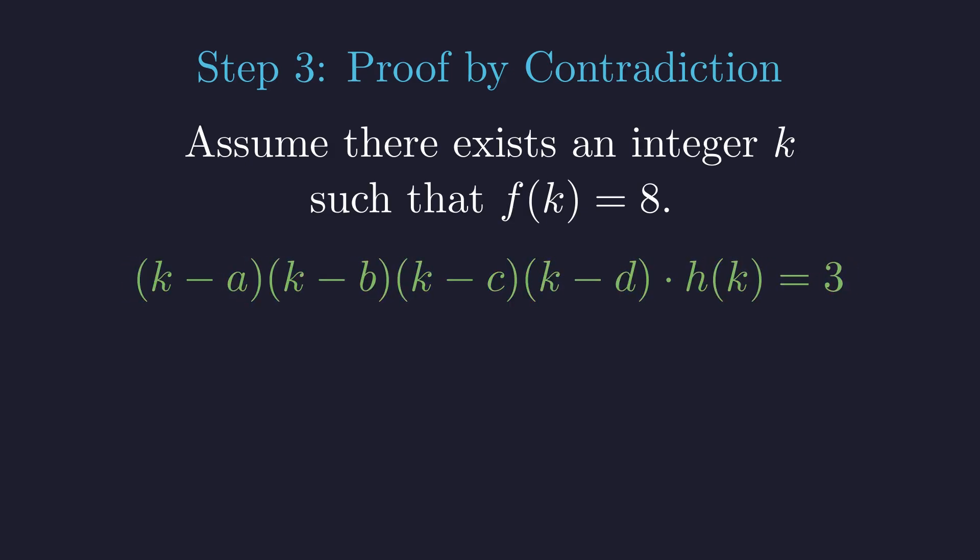Now let's think about what we have here. Since k and all of a, b, c, d are integers, each of these differences is an integer. And we established that h of k is also an integer. Crucially, since a, b, c, and d are all different from each other, these four factors k minus a through k minus d are four distinct integers.